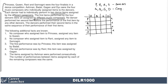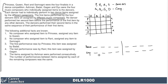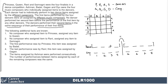No dancer performed the second item before the first item was performed by other dancers, so we have some sequencing here. Let's set up a grid: positions one through four for first items, and positions five through six through eight for second items, with four composers. The dancers perform their second items in the same sequence as they performed the first, so the sequence for both halves will be exactly the same.